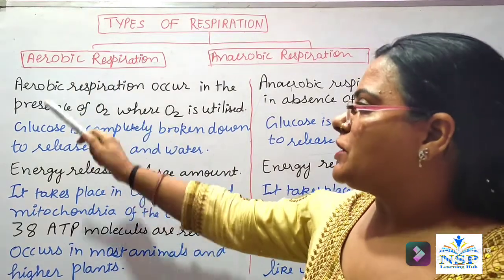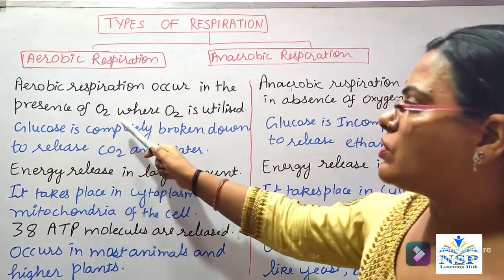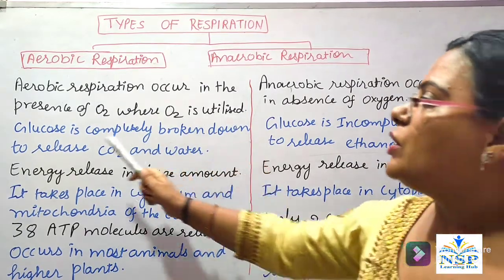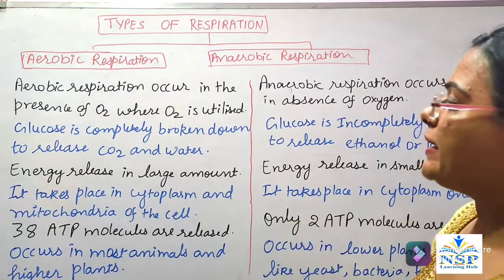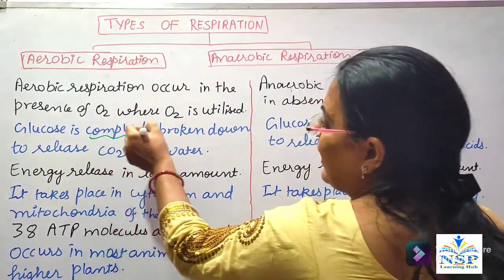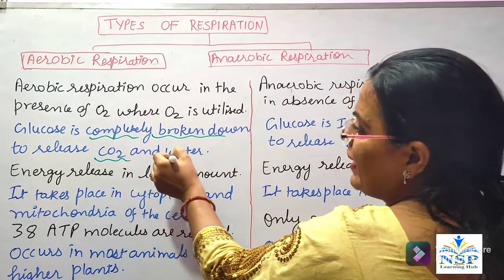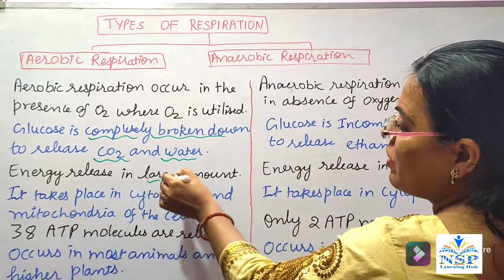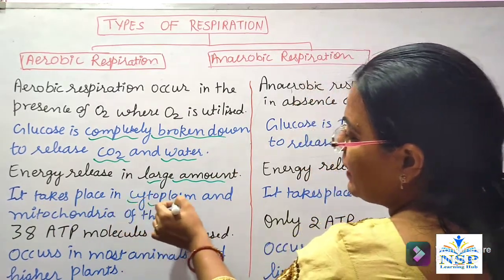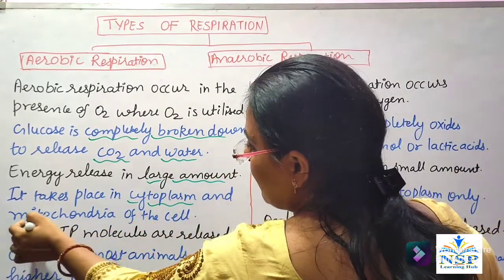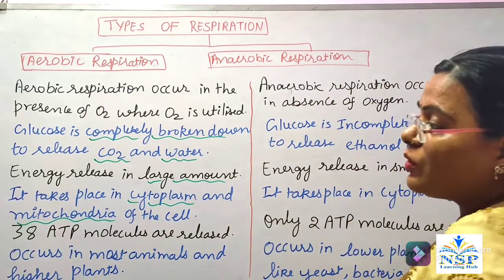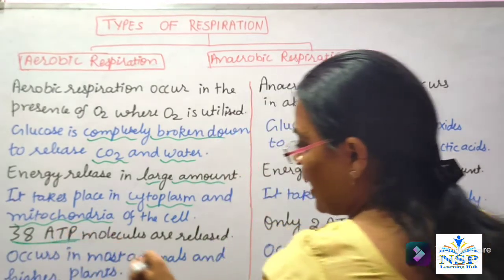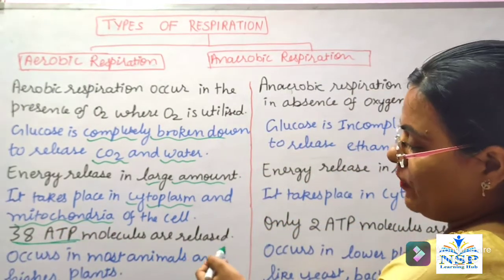Aerobic respiration occurs in the presence of oxygen, where oxygen is utilized for the oxidation of food. Glucose is completely broken down and the end products are carbon dioxide and water. Energy is released in a large amount. It takes place in the cytoplasm as well as in the mitochondria. Inside the cell, 38 ATP molecules are released in aerobic respiration.